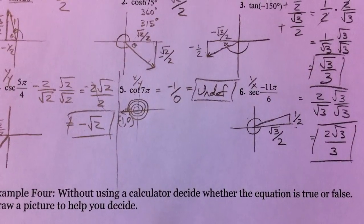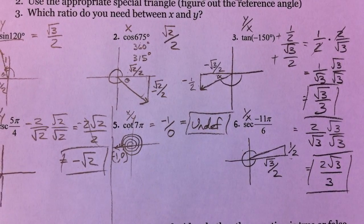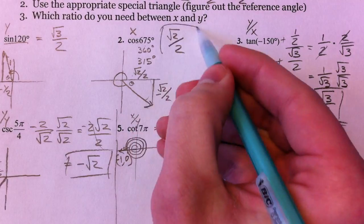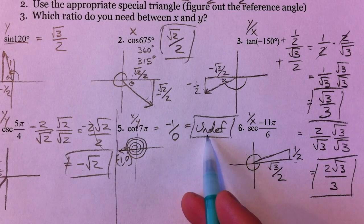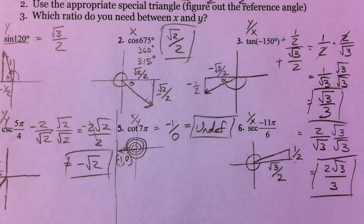Alright, those that went on, go ahead and check your answers. You got negative √2, got that it was undefined, 2√3/3, and then √3/3.